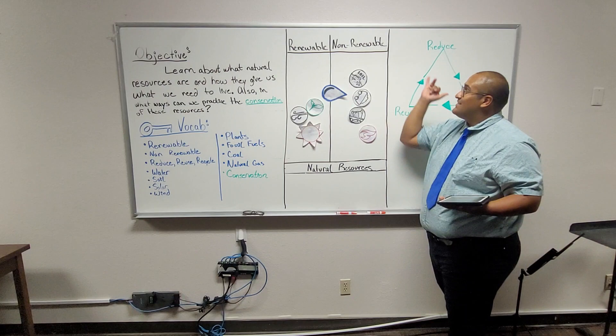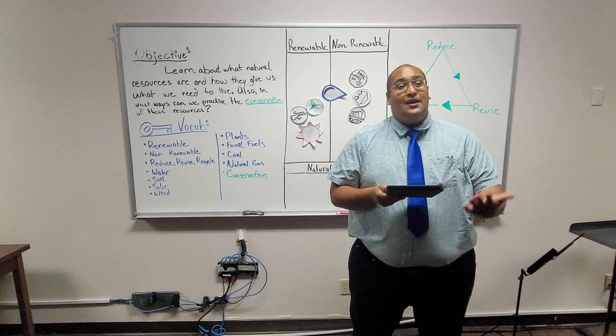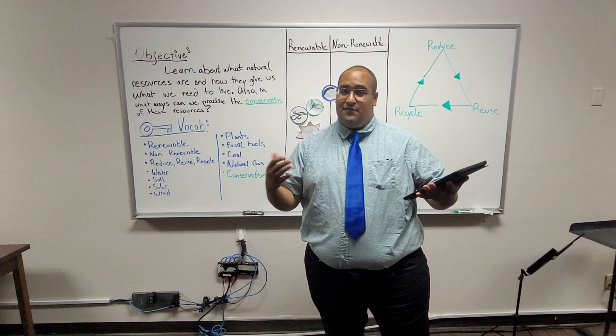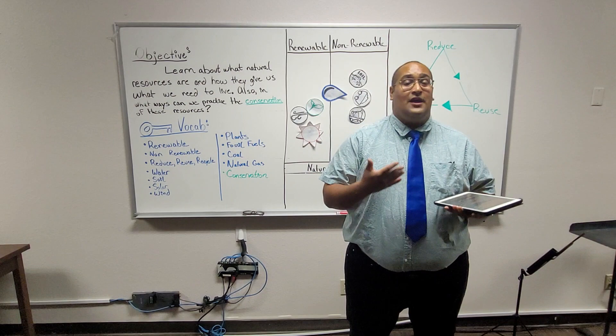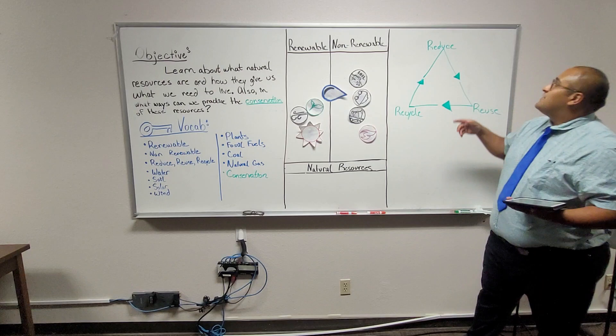So just to summarize everything we went over, there are a lot of resources on earth that we use. These are called natural resources. We use these things in order to live on our day-to-day. So with this in mind, we have to understand that they're not infinite. Meaning that we have to practice conservation and be responsible with how much we use or else we're going to run out. And a good way to remember this is practicing reducing, recycling, reducing, reusing, and recycling.